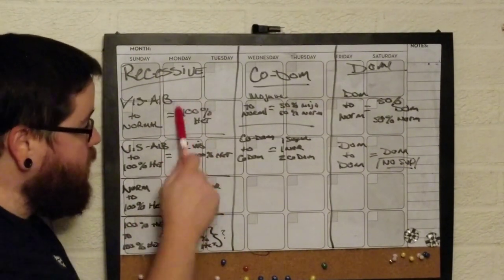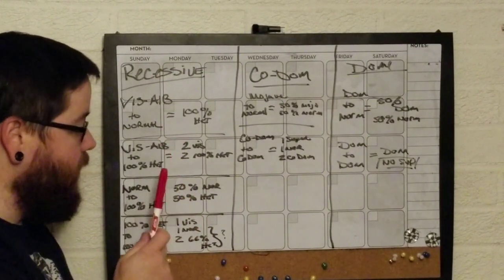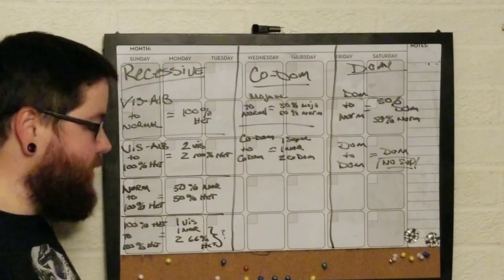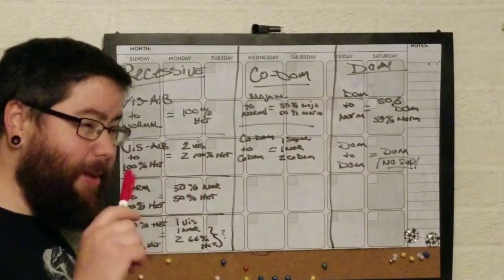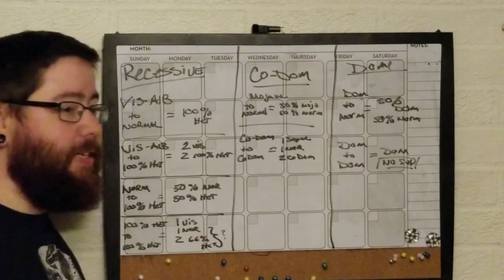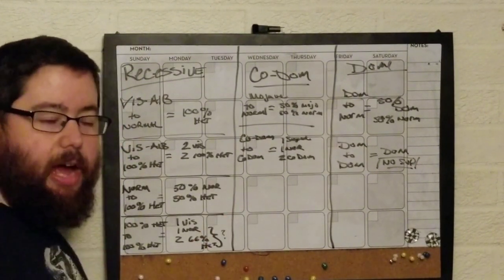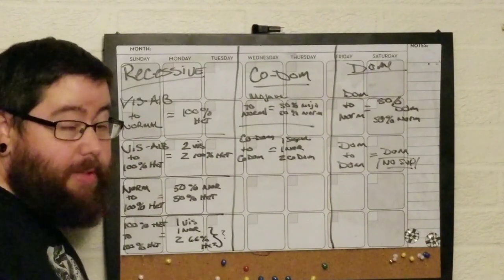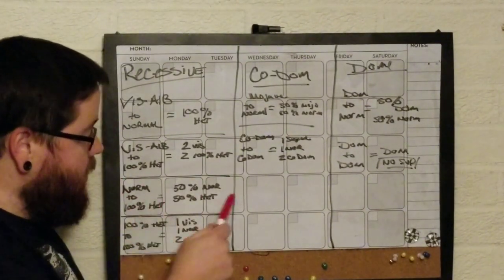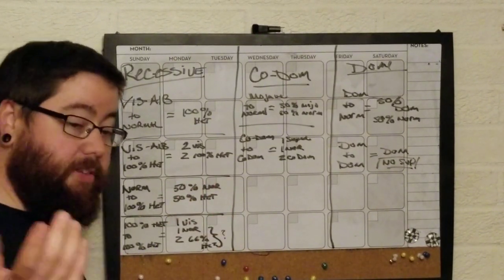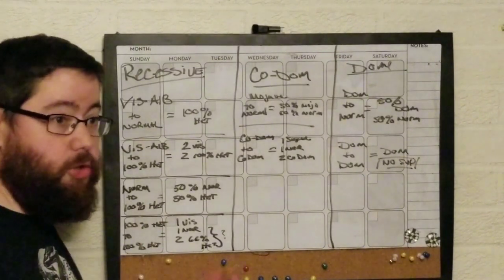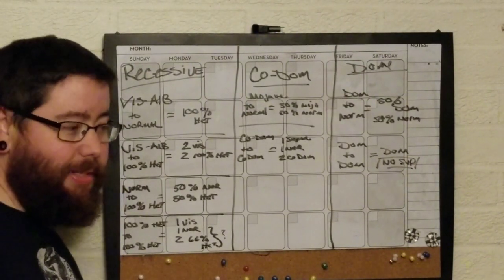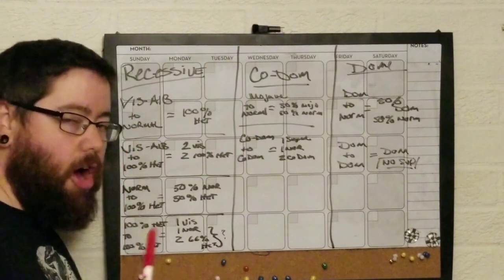Now if you were to take that het, the original het, and go back to the normal, what you're going to have there is 50% are going to be normal and 50% are going to be heterozygous. The problem is all of the babies are going to look normal. And because it's only a 50% chance that they're going to be heterozygous, that is where you see online, like whatever it may be - pinstripe 50% het G-stripe, or albino. Basically, they don't know because this is probably what they did, and they got all pinstripes.